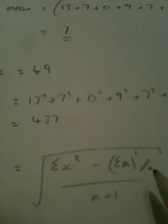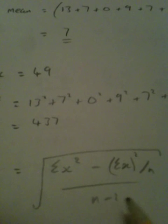All of that divided by n minus 1, all of that divided by 7 minus 1 in this case.